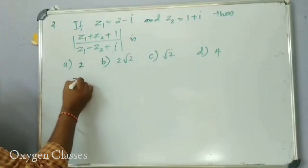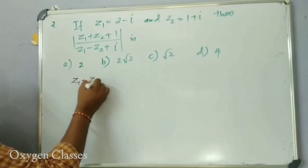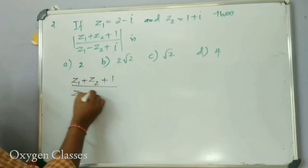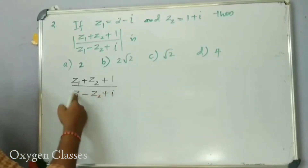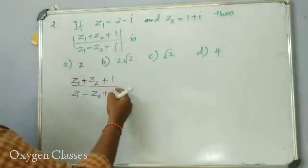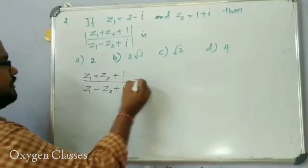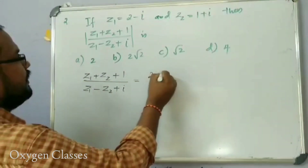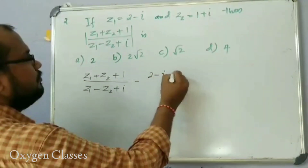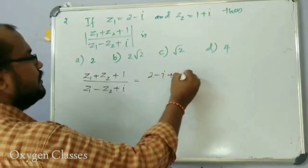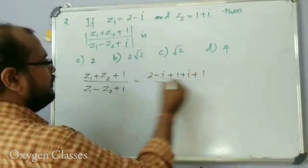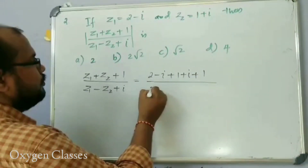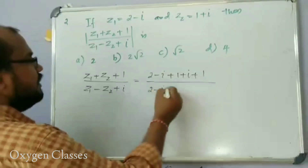We evaluate (z1 plus z2 plus 1) divided by (z1 minus z2 plus i). Substituting z1 = 2 minus i and z2 = 1 plus i: the numerator becomes (2 minus i) plus (1 plus i) plus 1, and the denominator becomes (2 minus i) minus (1 plus i) plus i.